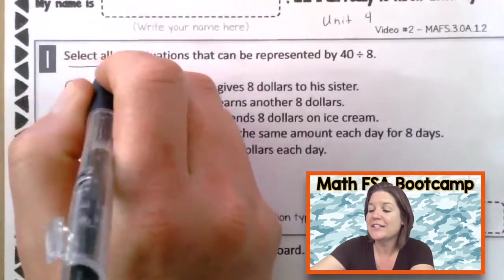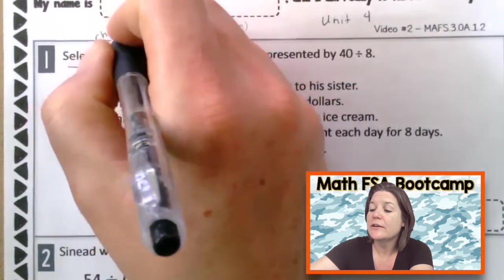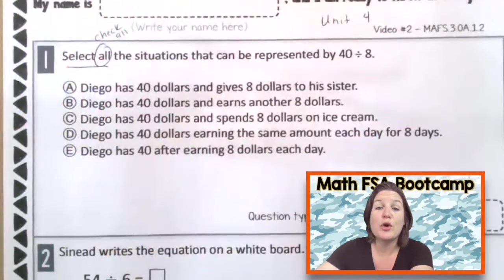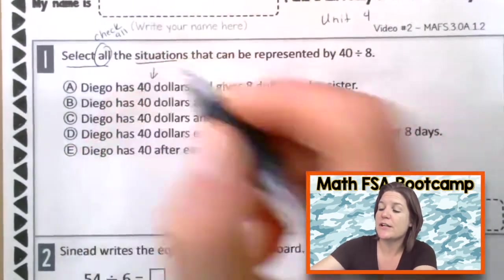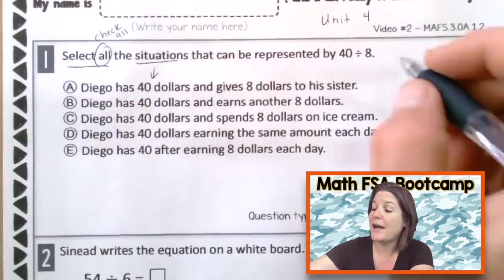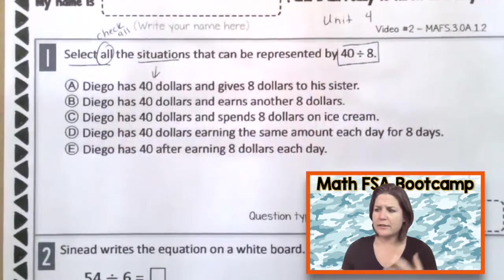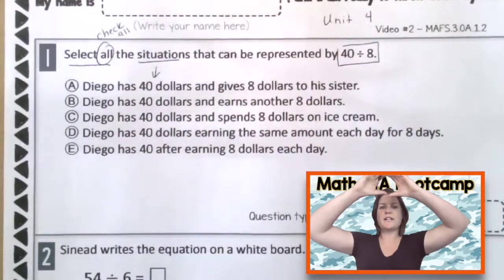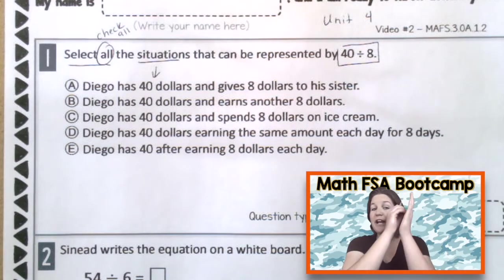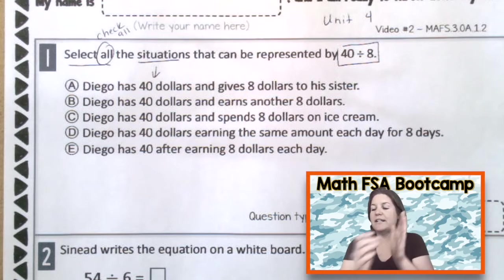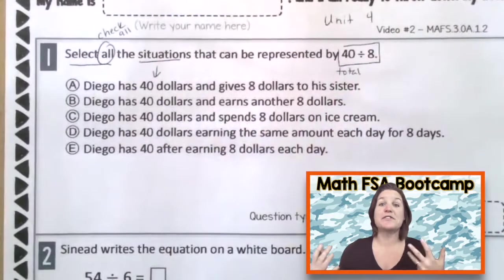So we have a select all. That means we are going to check all of them. We're going to go through all of them and see, select all the situations that can be represented by 40 divided by 8. For 40 divided by 8, 40 represents the total. And we're dividing it by 8, either 8 groups or 8 things in each group. So 40 would be the total. Then we're splitting it into 8 of something.